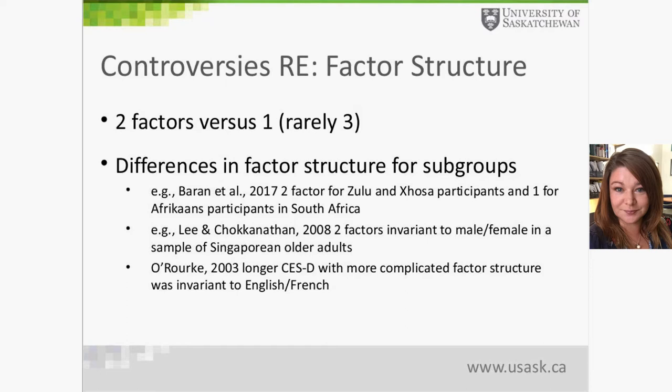Our work focuses on further controversies regarding measurement — specifically whether the CES-D has a similar factor structure for particular subgroups of participants. For example, Biron et al. in 2017 found a two-factor structure for participants of Zulu and Xhosa background but a one-factor structure for Afrikaans participants in South Africa. Lee and Chokaran in 2008 found that the two factors were invariant across males and females in a sample of Singaporean older adults.